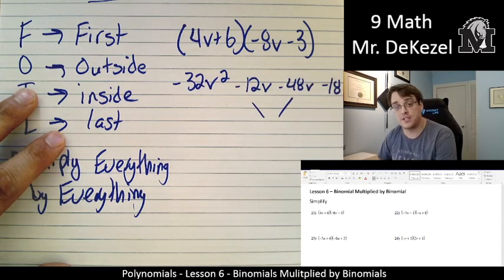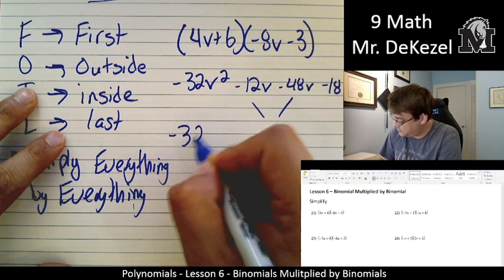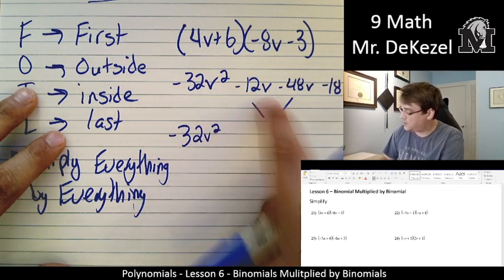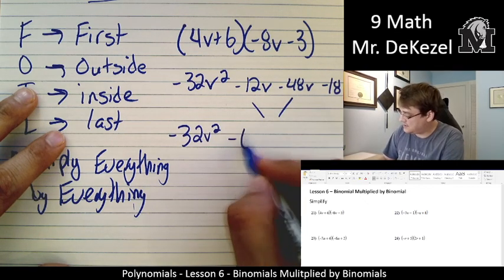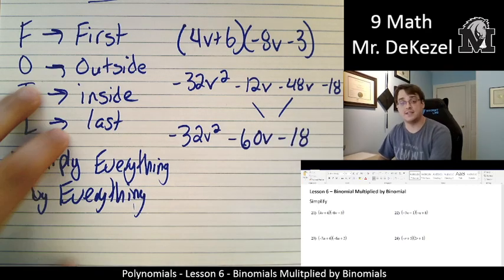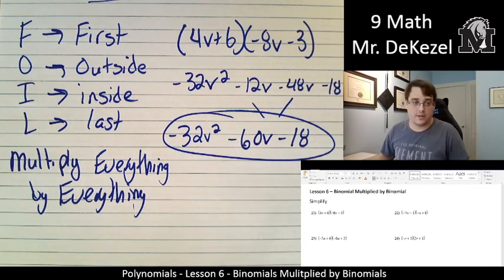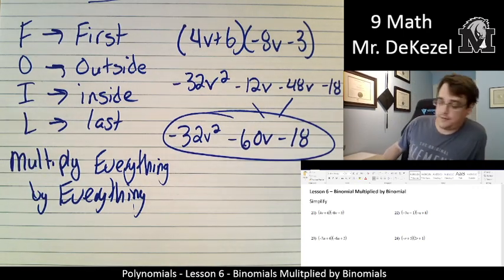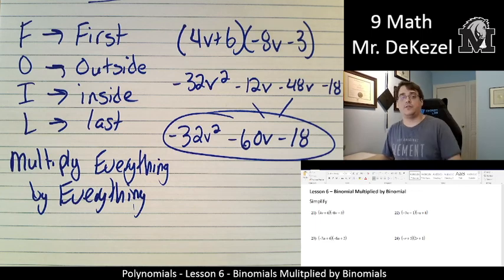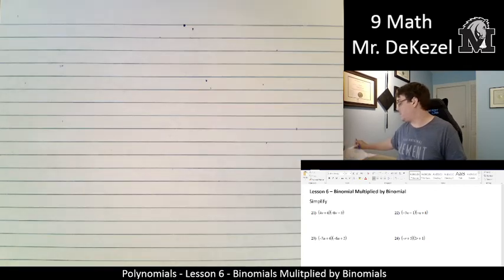And usually, most of the time, it's going to be the two middle terms that are the same. So -32V² - 12V - 48V, that's -60V - 18. And that would be our answer. So stick with the foil. Stick that in your head. Do the first, the outside, the inside, and the last. And that is the best way to go. Let's do some more problems.